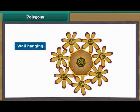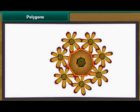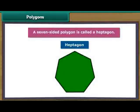Let us create a wall hanging using seven straws. The rainbow wall hanging with seven line segments is ready. A seven-sided polygon is called a heptagon.